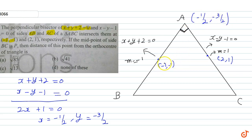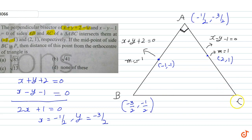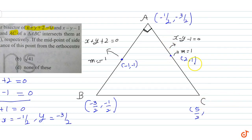अब यह A का midpoint है। Similarly, B के coordinates: midpoint (-1,-1) से, B = (-3/2, -1/2)। C के coordinates: midpoint (2,1) से midpoint theorem लगाएंगे — x-coefficient का half 2 के equal और y-coefficient का half 1 के equal होगा — तो C आएगा (5/2, 7/2)।